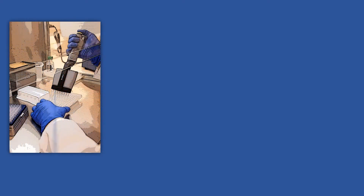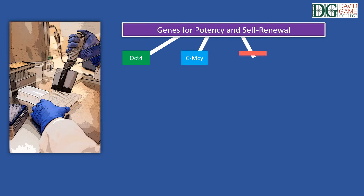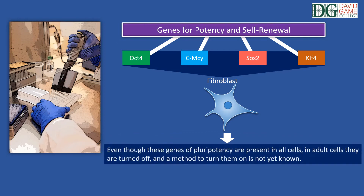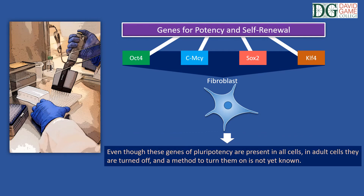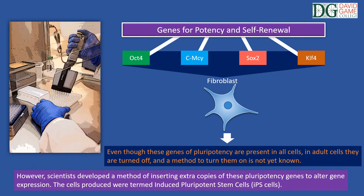Research has shown that just a few genes are responsible for the cells' characteristics of pluripotency and self-renewal. Specifically, these genes are OCT4, CMYC, SOX2, and KLF4. Even though these genes of pluripotency are present in all cells, in adult cells they are turned off, and a method to turn them on is not yet known. However, scientists developed a method of inserting extra copies of these pluripotency genes to alter gene expression.